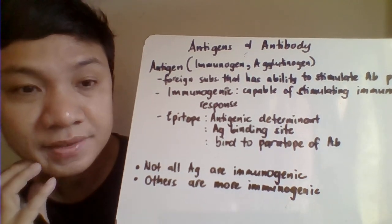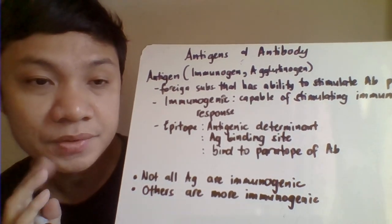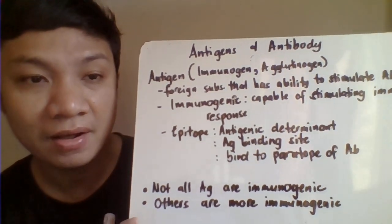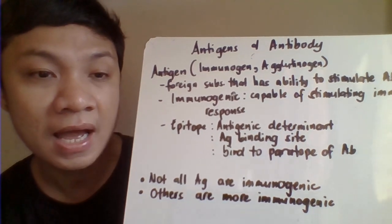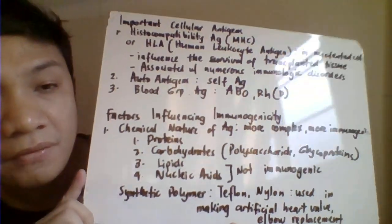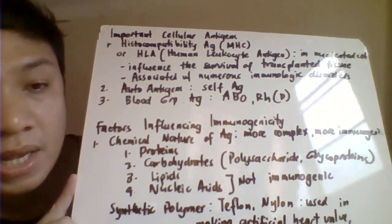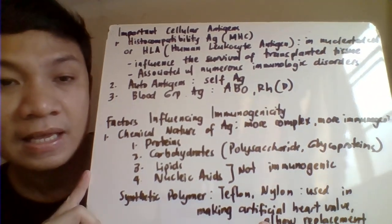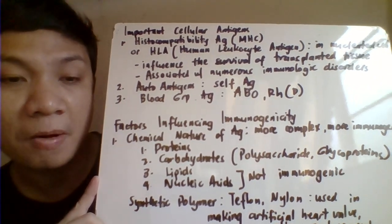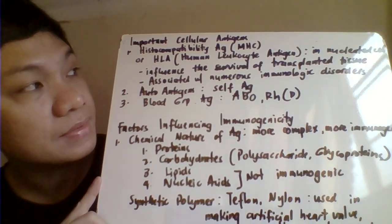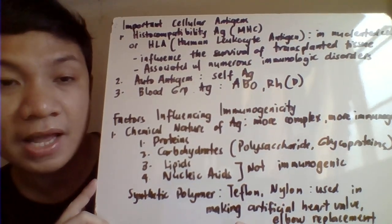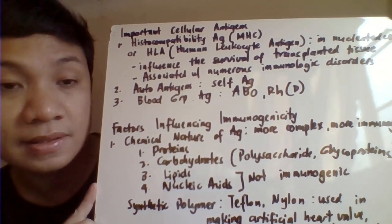There are some antigens which are considered more immunogenic compared to others. We'll discuss the different factors that determine the immunogenicity of our antigen. Among the highly immunogenic antigens, the first example is the histocompatibility complex — the MHC, or major histocompatibility complex. Another name for that is the HLA, or human leukocyte antigen.